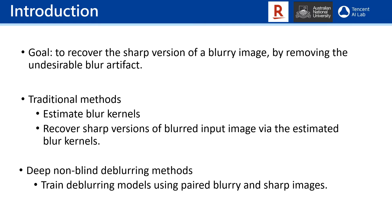Image de-blurring is a classical problem in computer vision. Given a blurred image, the goal is to recover a sharper version of the original image by removing the blur. Traditional de-blurring methods handle this problem by estimating a blur kernel. A sharper version of the input blurred image can then be recovered through that kernel.